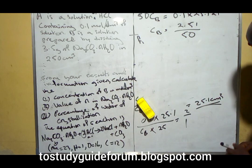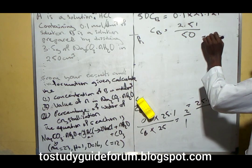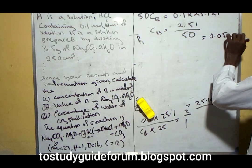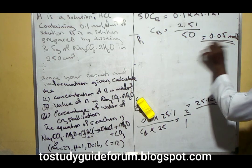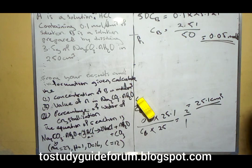When we divide, we have 0.05 mole per dm³.